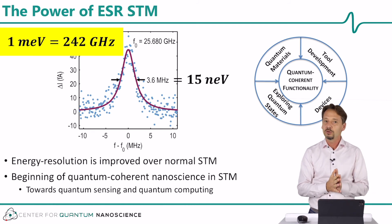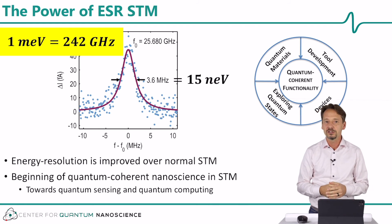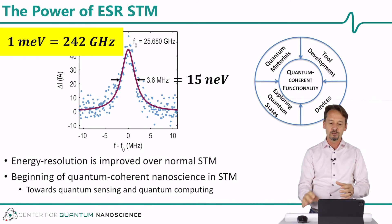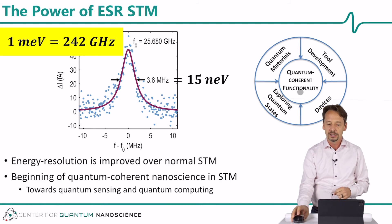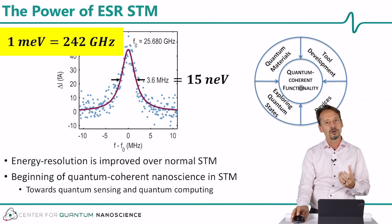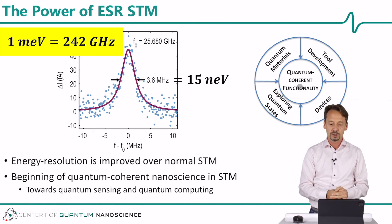The second point is that having such quantum coherence in the STM enables us to reach the goal of utilizing STM for quantum coherent functionality in quantum nanoscience. This is really where I believe the future of our STM work lies. We want to control spins to use them for quantum sensing and possibly also for quantum computing.